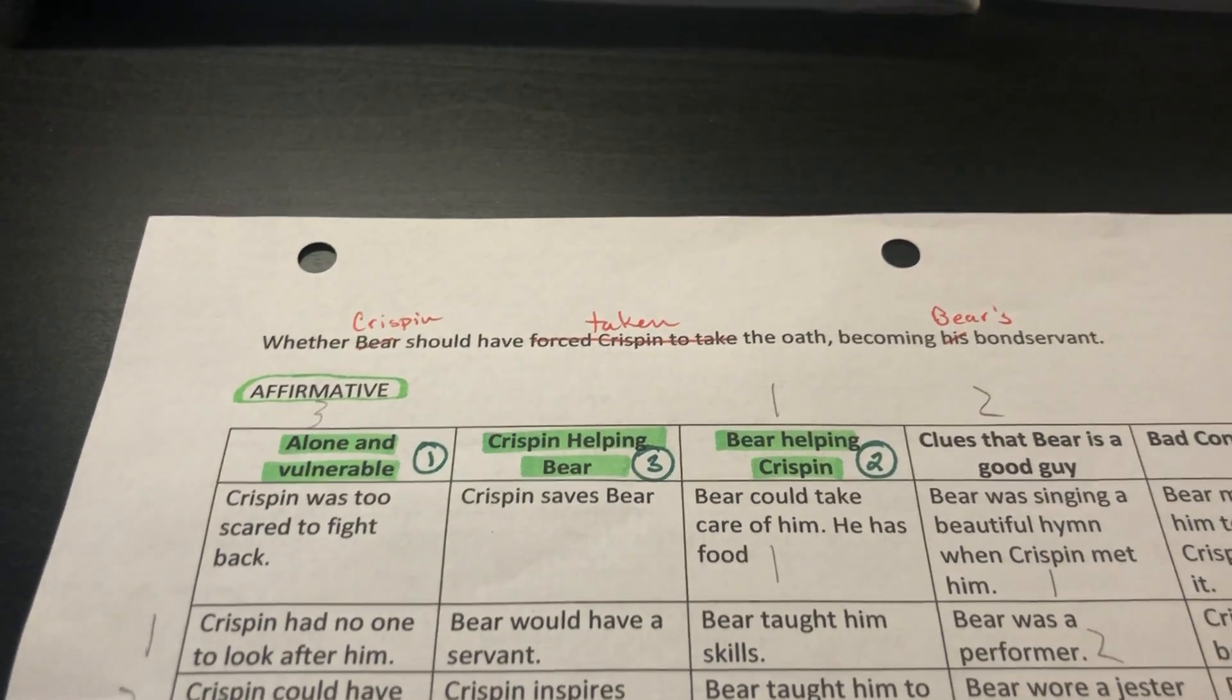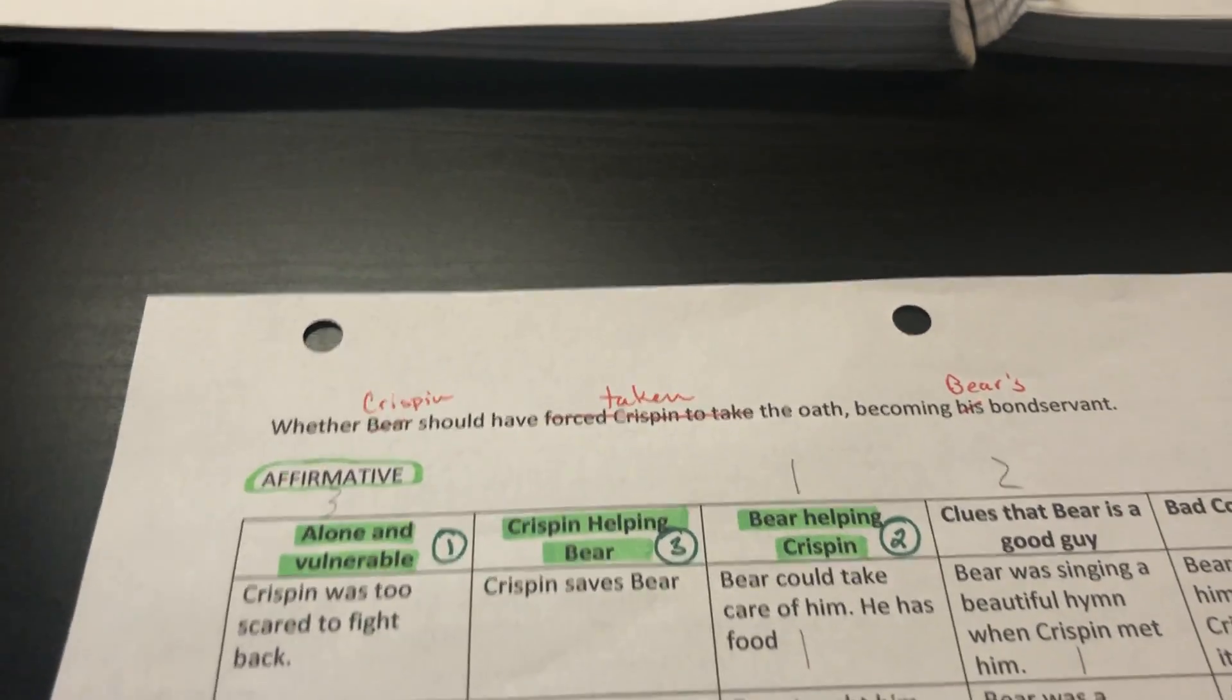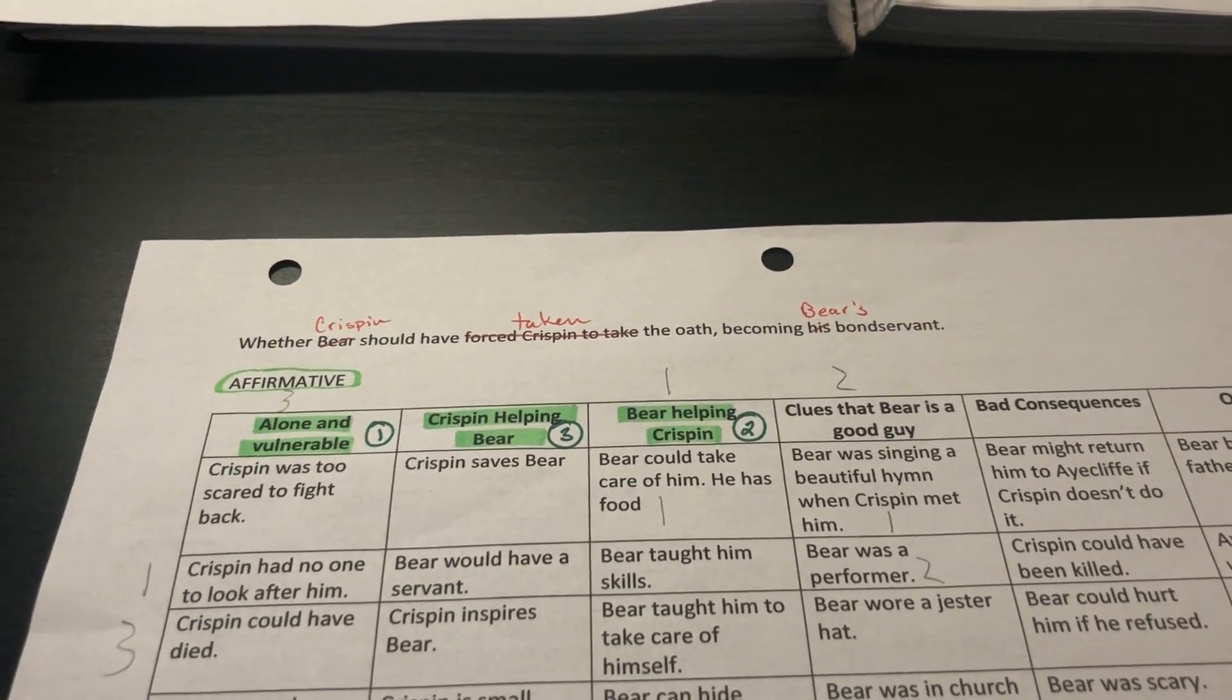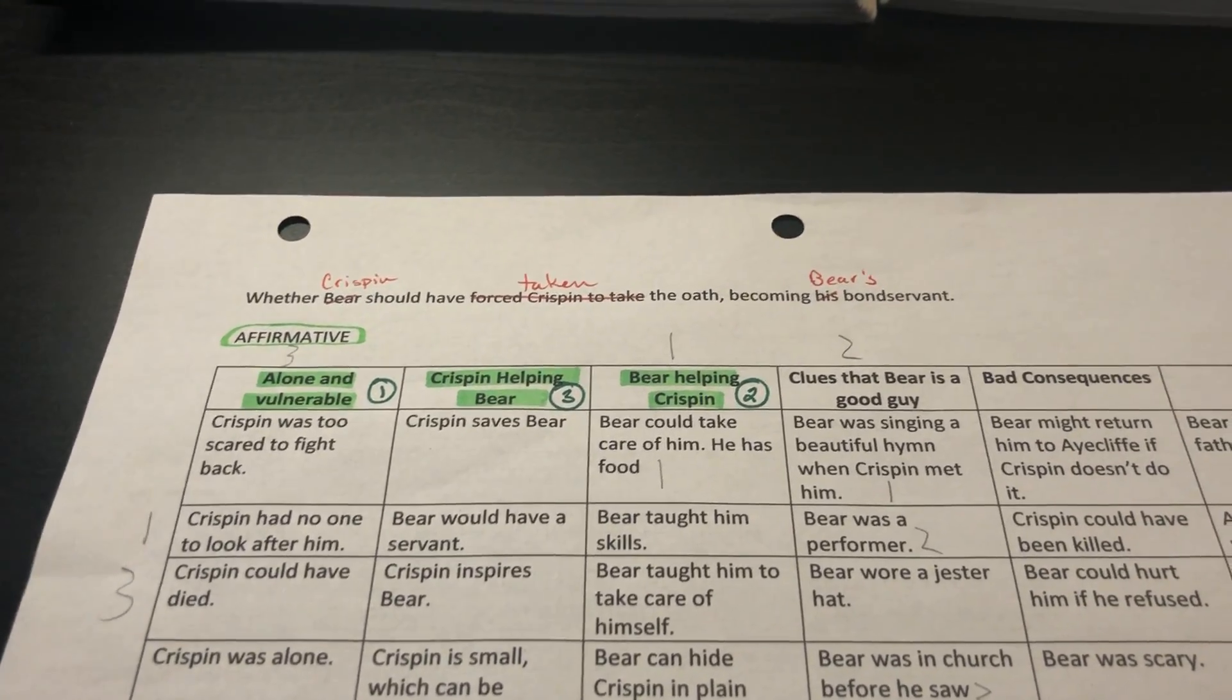So whether Crispin should have taken the oath, becoming Bear's bondservant. That's going to happen. The more you dig in, the more you think about your stuff, the more you tweak things and you realize it's actually better written a little bit different way. So that's totally okay when we do that.